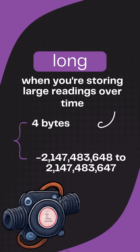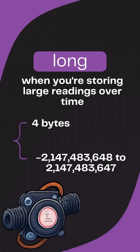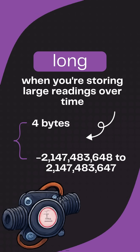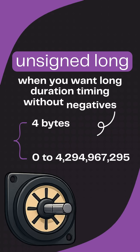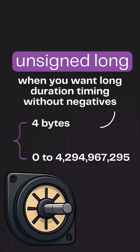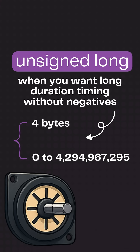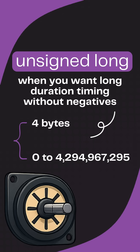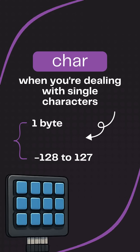Use long for flow sensors — great for large counts or time tracking, four bytes of big data. Use unsigned long best for timers using millis — it stores large positive-only values and avoids overflow in real-time systems.